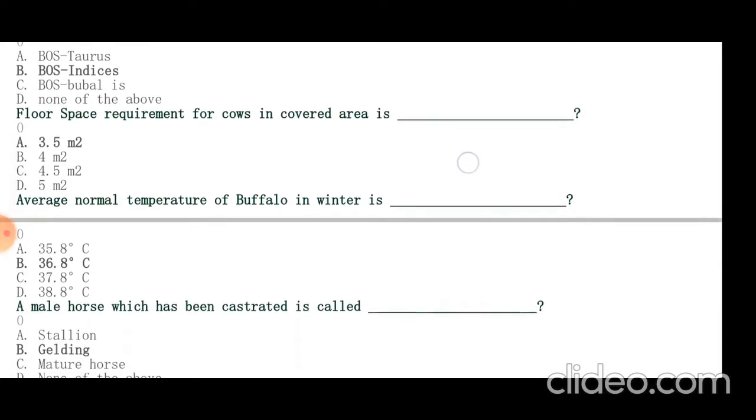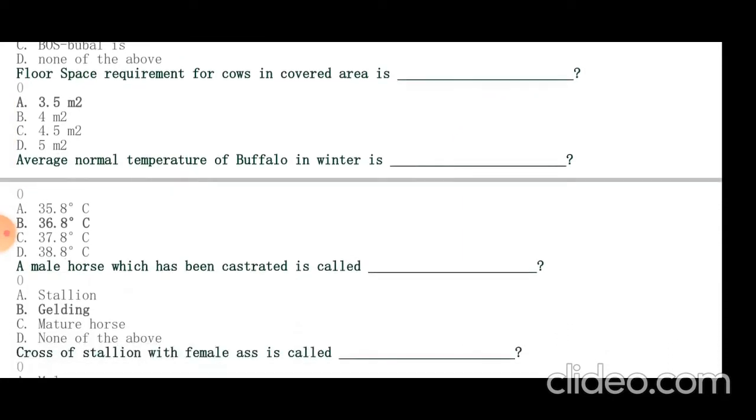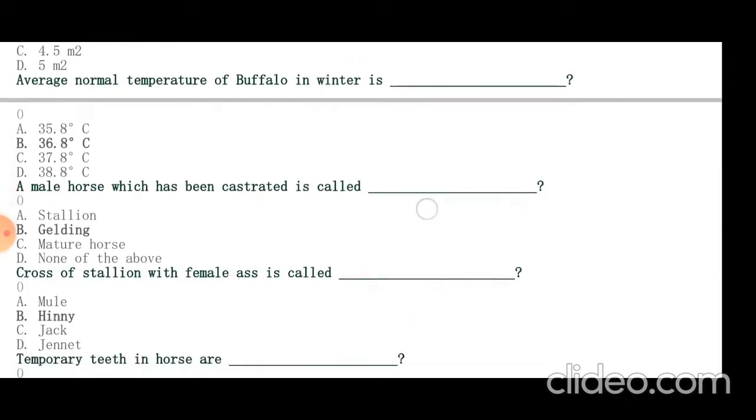A male horse which has been castrated is called gelding. Cross of stallion with female ass is called hinny.